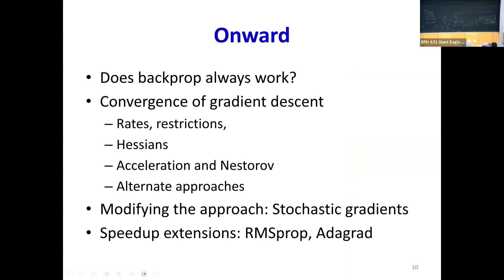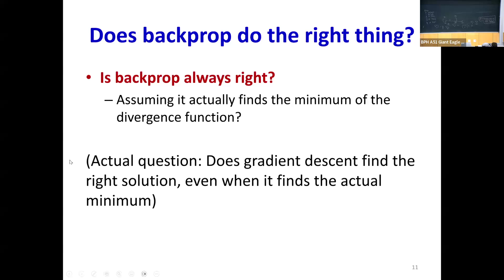We're going to try to ask some questions. Does backprop always work? What does it mean for it to converge? This is what we're going to cover over the next few lectures. Is backprop always right — meaning, does gradient descent find the right solution, even when it actually finds the minimum of your loss function? Remember, what was the loss? Was the loss the actual objective we were trying to minimize?